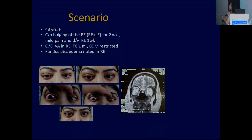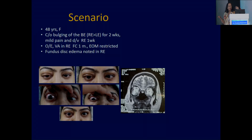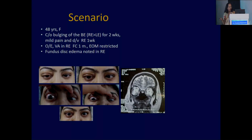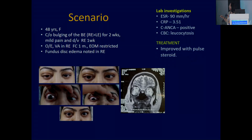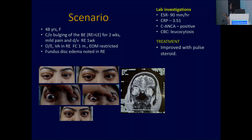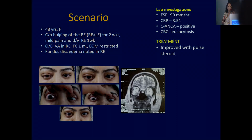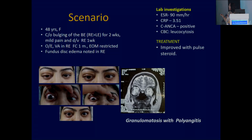This is a patient from my clinical practice — a 40-year-old lady. The diagnosis was done outside. For 10 years the patient was suffering with granulomatosis with polyangiitis, which we previously called Wegener's granulomatosis. The patient came with mild pain. C-ANCA and P-ANCA were all positive, with high ESR. The patient improved with pulse steroid. The patient was already on rituximab. But when the patient developed RAPD and vision of finger counting, we had to add IV methylprednisolone. So this is granulomatosis with polyangiitis.